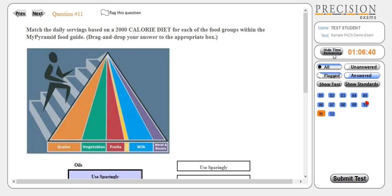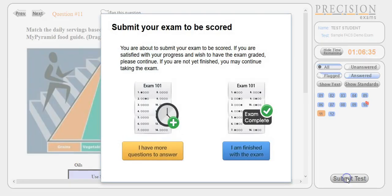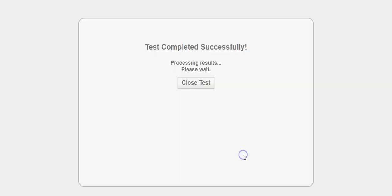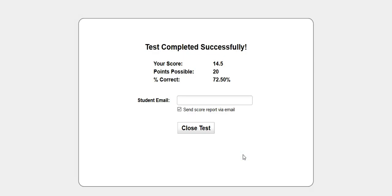Once all the questions have been answered and the student is satisfied with their responses, they click the submit button and the test is scored. The next screen will display the student's score including the percentage that were answered correctly. Students also have the option to receive their test scores through email.